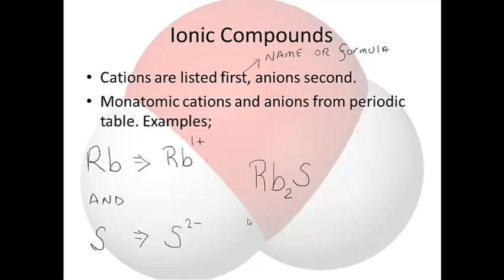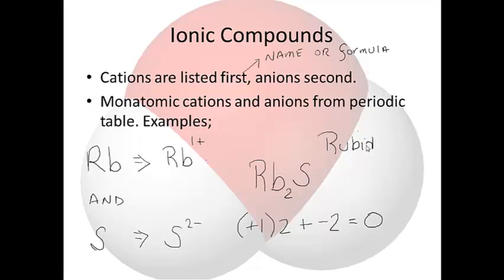Let me check my work. Rubidium is +1 and there are two of them: 2 times +1 = +2. Sulfur is -2 and there is one of them: 1 times -2 = -2. These add up to zero. Therefore, the formula is Rb₂S, which is called rubidium sulfide — a two-to-one ratio of rubidium to sulfur atoms.